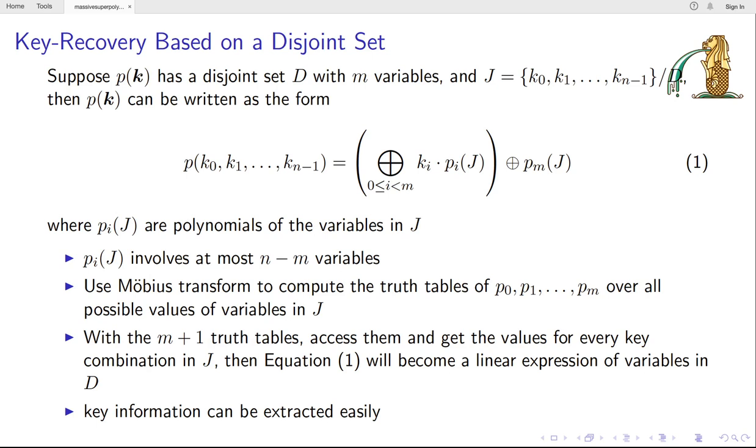When, where p_ij is a polynomial of the variables in j. So p_ij involves at most n minus m variables, and we can use Möbius transform to compute the truth table of p_0j, p_1j, until p_(2^m-1)j. And the time complexity for each table is (n-m) times 2^(2n-m-2). With the 2^(m-1) truth tables, we can access them and get the values for every k combination in j. Then equation 1 will become a linear expression of variables in d. So some key information can be extracted easily.